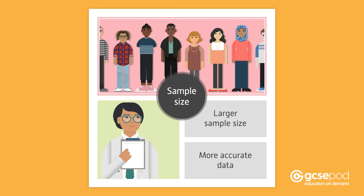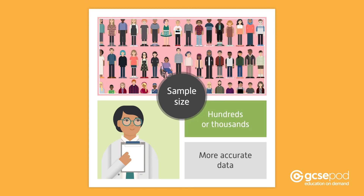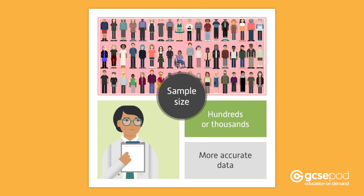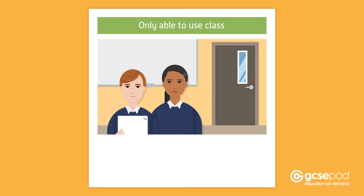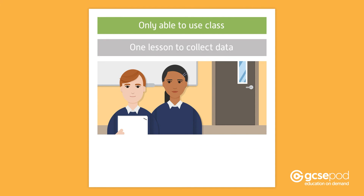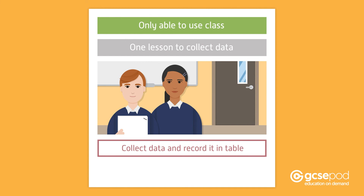When scientists carry out research, they often use a sample size of hundreds or thousands of people. Your sample size will depend on how many people you have access to and how much time you have to take your measurements. You might only be able to use your class, or you might only have one lesson available to collect your data. You then collect your data, being careful to record it in a table.